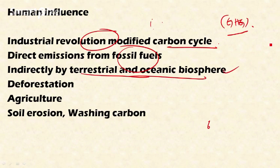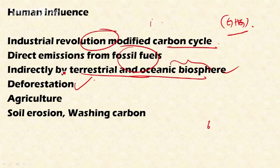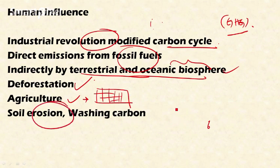In the terrestrial biosphere, deforestation contributes to carbon emission. In the oceanic biosphere, destruction of coral reefs — the foundation of oceanic ecosystems, considered the evergreen forests of the ocean — contributes to carbon release. In agriculture, we burn crop residues rather than allowing them to decompose into organic matter, further contributing to the carbon cycle. Soil erosion also washes soil carbon into water sources like lakes, oceans, and reservoirs, further interfering with the carbon cycle.